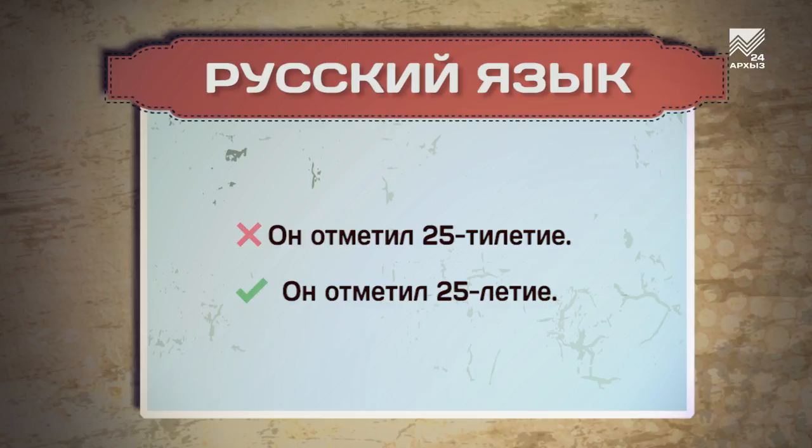Он отметил 25-летие. Кажется, что написать существительное с числительным в формате цифр гораздо проще, чем одним словом. Но и здесь есть свои нюансы. При записи сложных существительных или прилагательных, в составе которых есть числительные и буквенные наращения, наращения не нужны. Поэтому правильно только так: «25-летие» — в одно слово или в формате цифр через дефис.